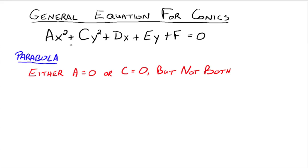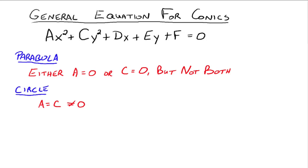If a was zero, then the x squared term would go away — you'd just have y squared, and you could rewrite that as a parabola that opens right or left. So either the coefficient of x squared or the coefficient of y squared has to be zero to get a parabola, but not both. If both a and c are zero, then you'd be left with dx plus ey plus f equals zero, and that would just be the equation of a line.